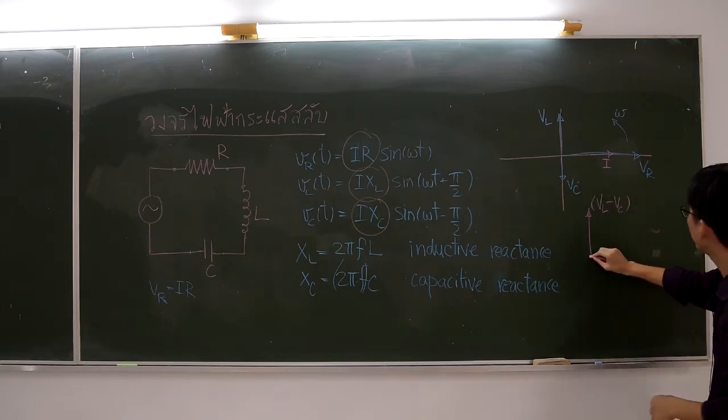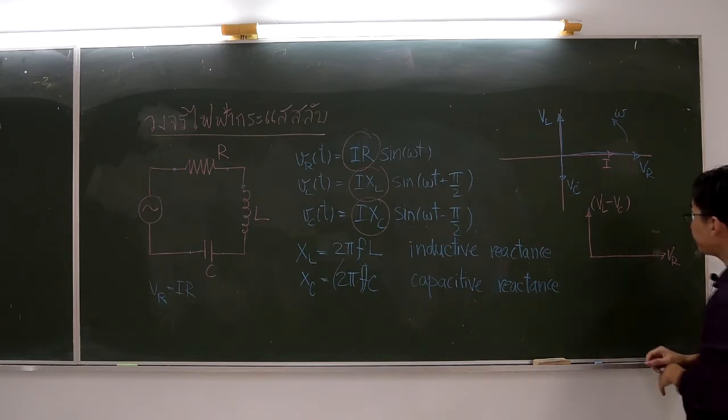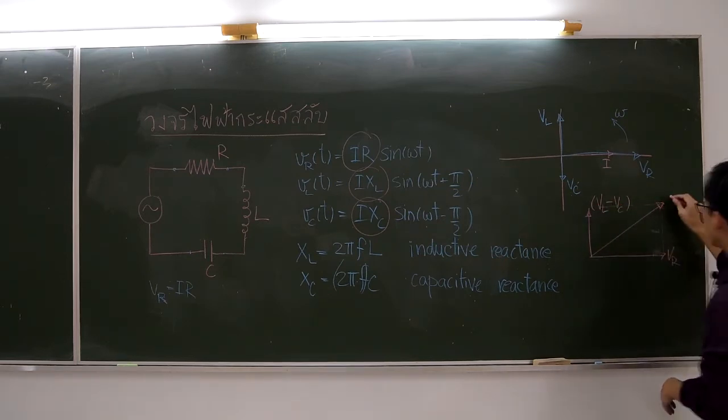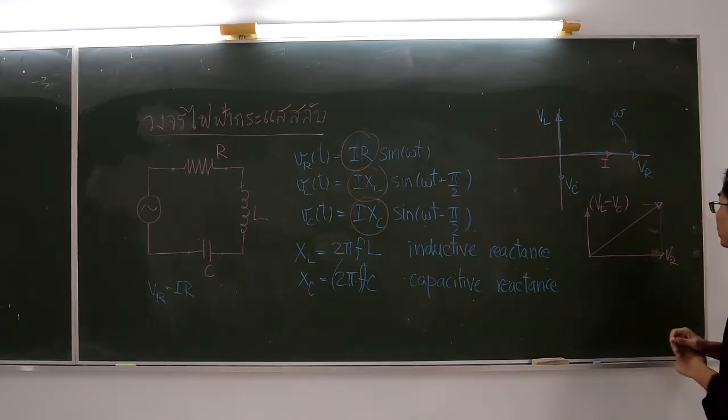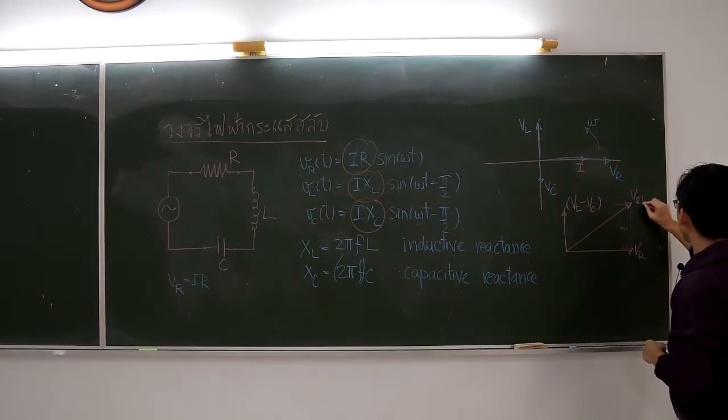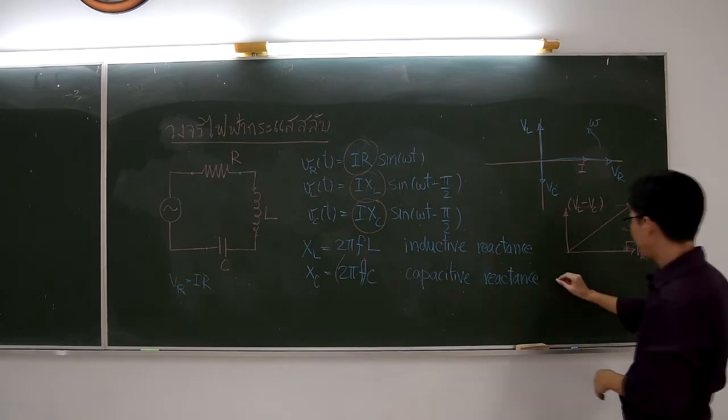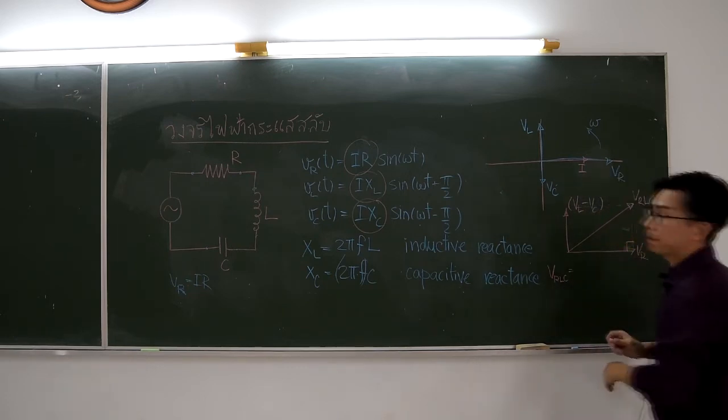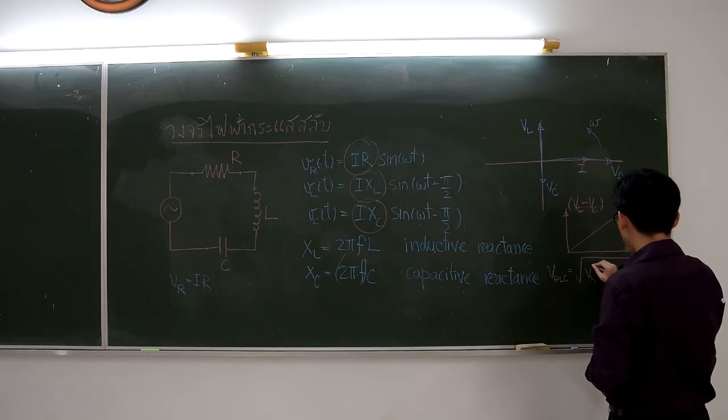Now, we will find VRLC by the Pythagorean theorem because VL minus VC is perpendicular to VR, so it forms a right triangle. Then, VRLC is equal to the square root of VR squared plus VL minus VC squared.